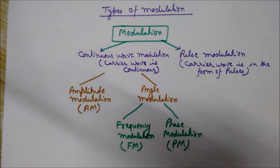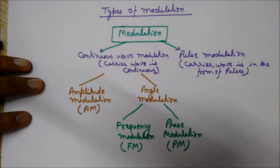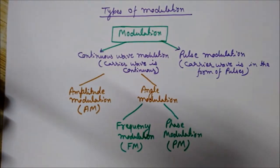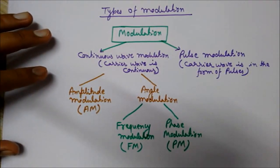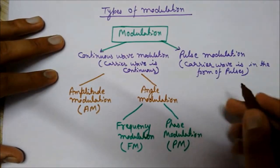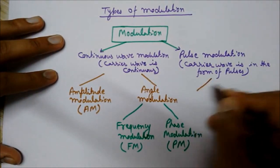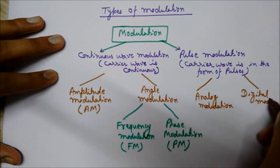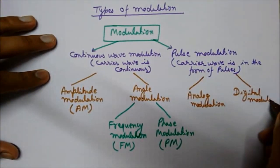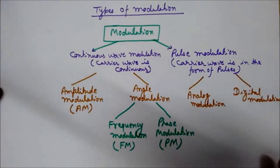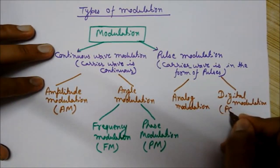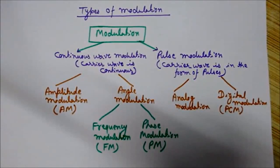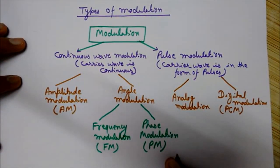Now we will see the types of pulse modulation. Pulse modulation can be classified into two forms: analog and digital. An example of digital modulation is pulse code modulation, PCM, which we will discuss later. The types of analog pulse modulation can be broadly classified into two types.